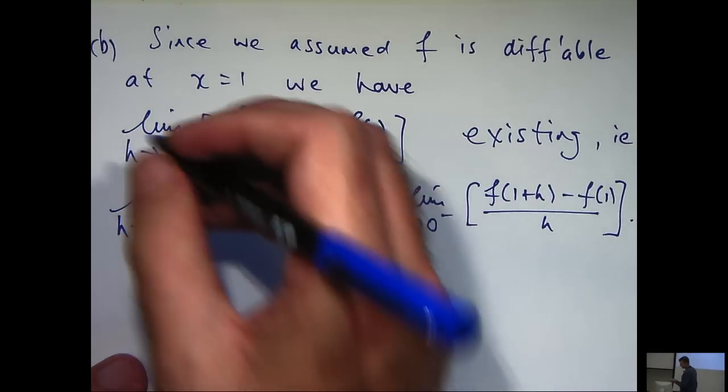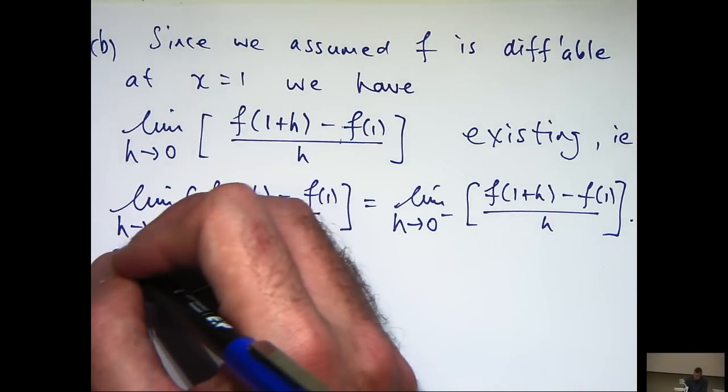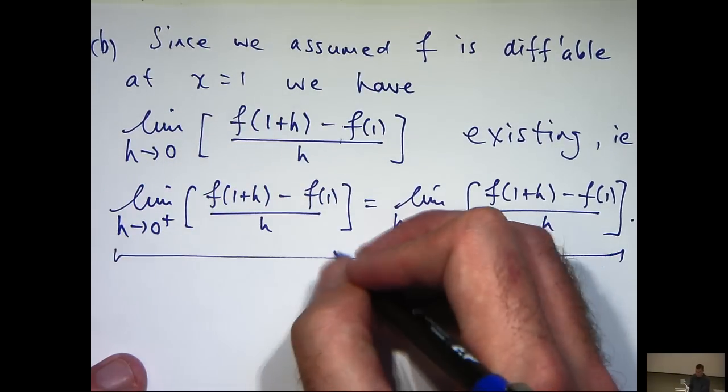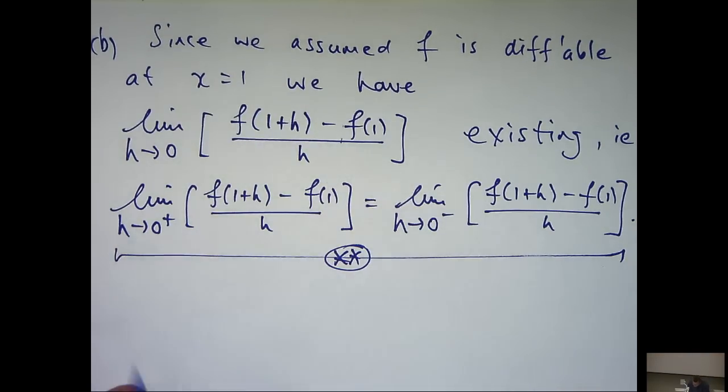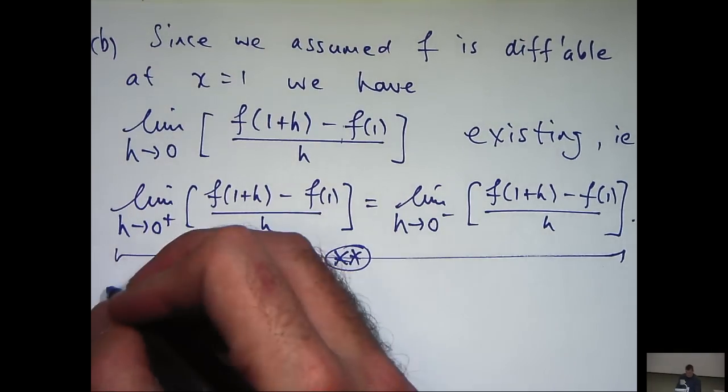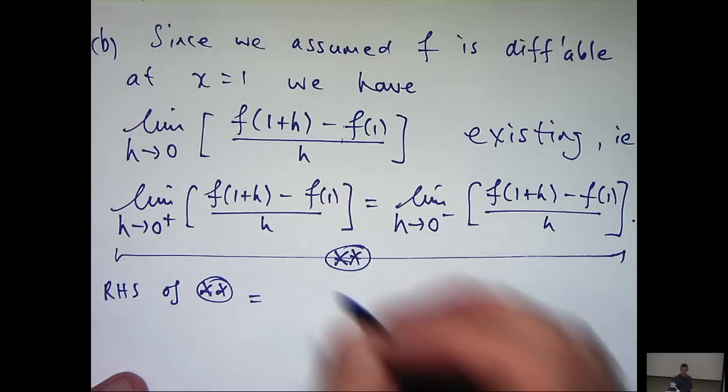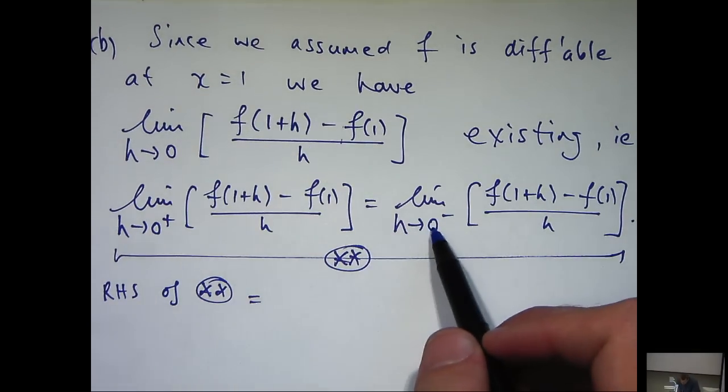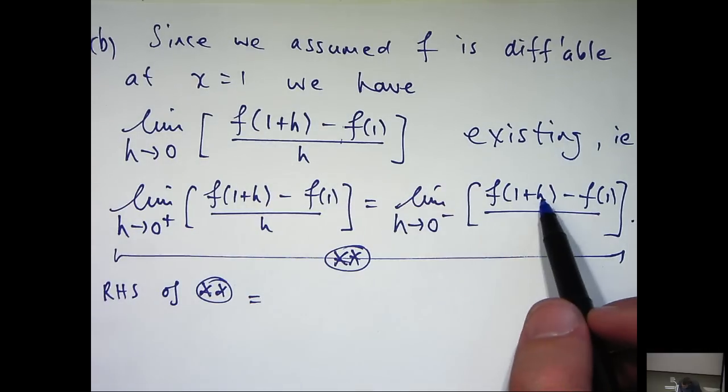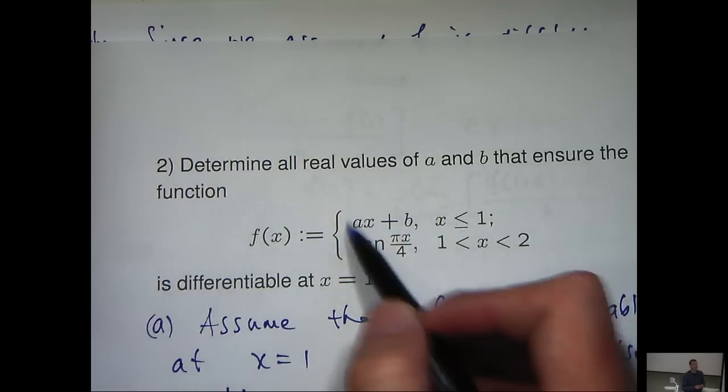So, we're going to use this relationship to form another equation involving a and b. Let's call this double star. Now the left-hand side of, well actually let's do the right-hand side first. The right-hand side is actually easier. So, let's take this limit here. Well we're approaching 0 from the left so h is negative here. So, 1 plus h is less than 1. So, this would be my definition for f in that case.